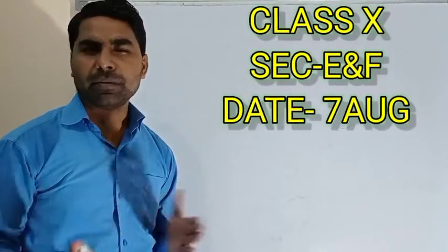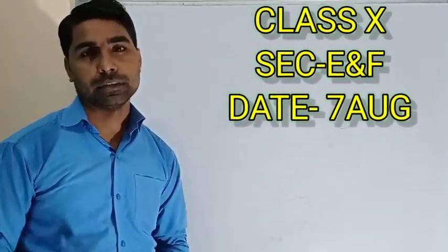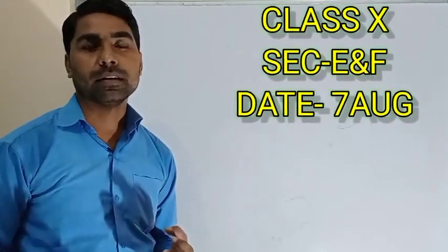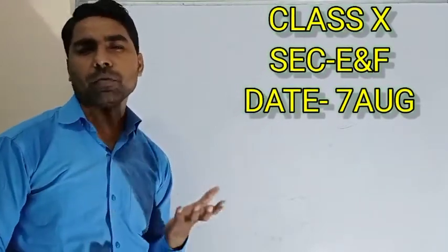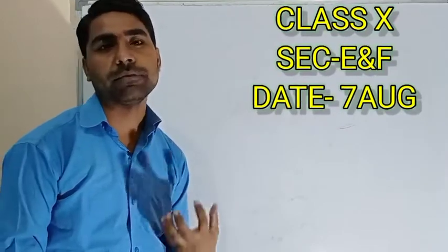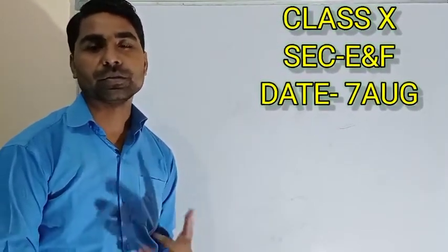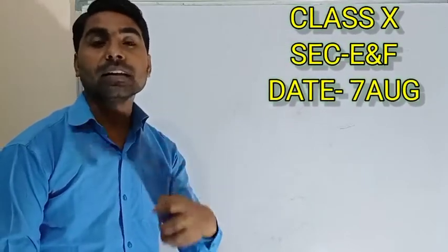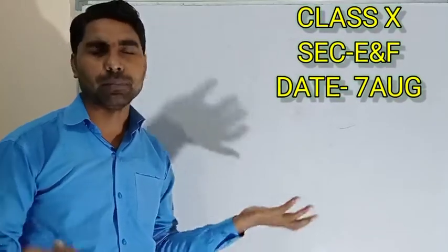Welcome back, class 10. In the previous lecture, we were discussing about the infrared radiation — the sources, the devices to detect it, and the properties. One more property from the book: if you continuously see infrared radiation, your eyes will be damaged. Also, the sun is emitting infrared radiation, which is why we can see its heating effect.